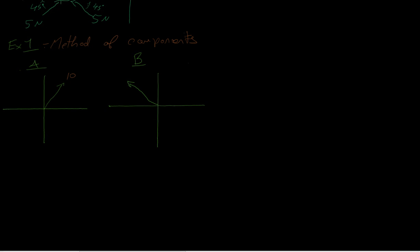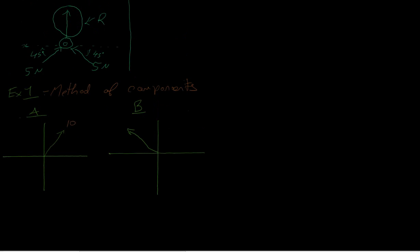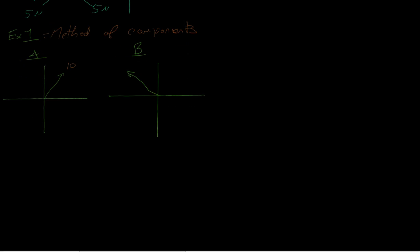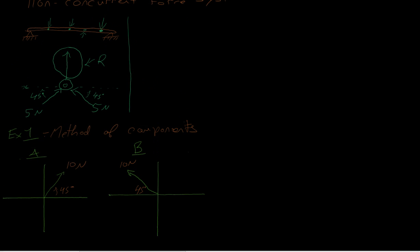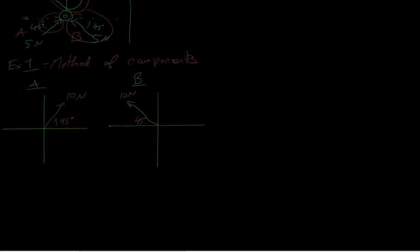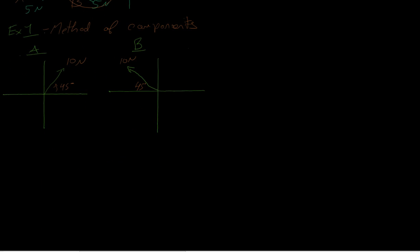Let's do an example. I'm going to find the resultant using the method of components. I'll change the 5 into a 10, so we have force A at 10 newtons at 45 degrees and force B at 10 newtons at 45 degrees. We're asked to find the resultant — the magnitude and the direction. For every force we have, we need to break it into x and y components.